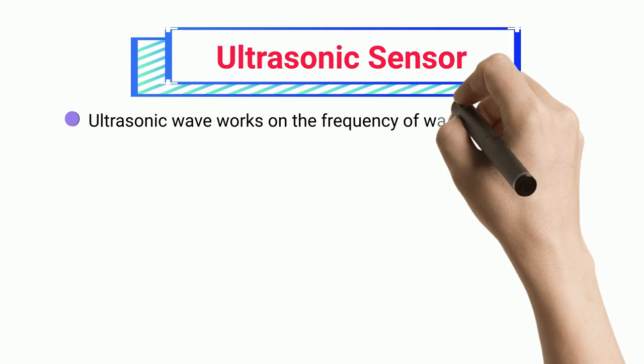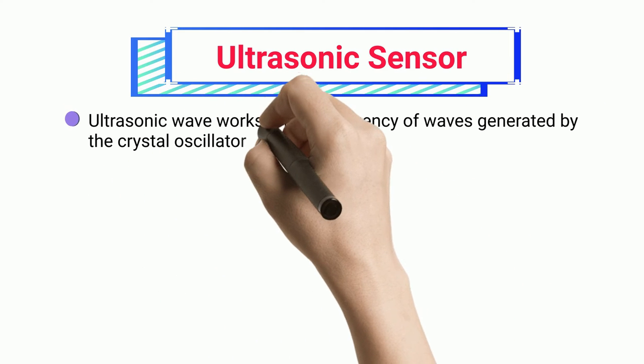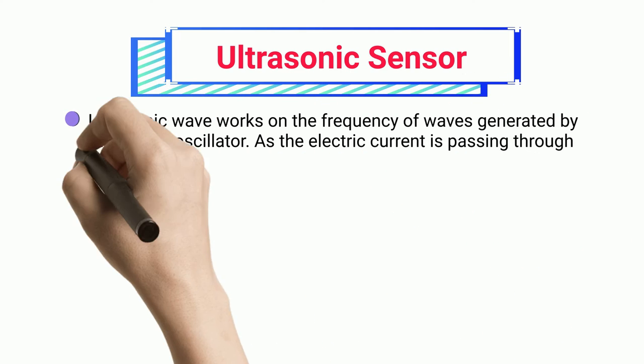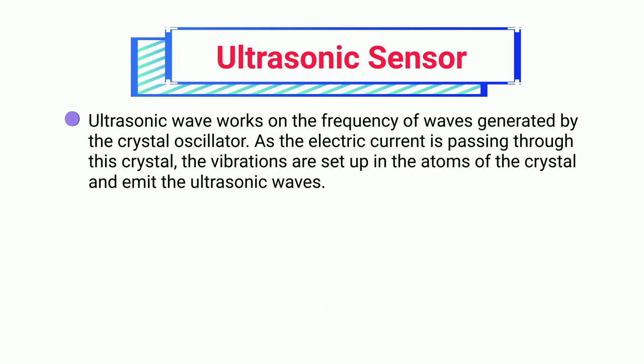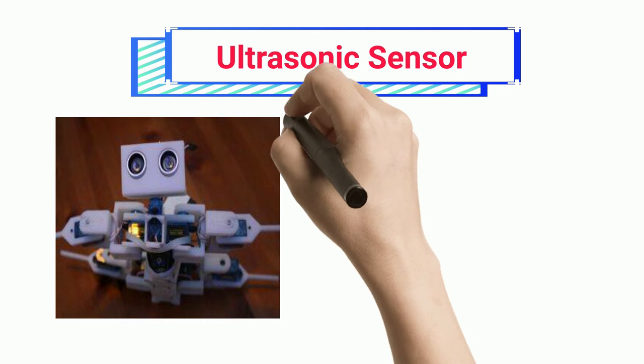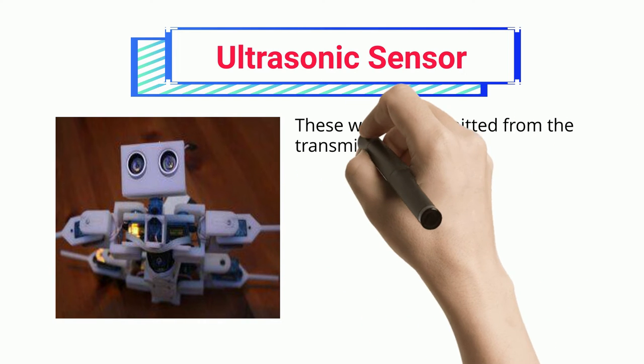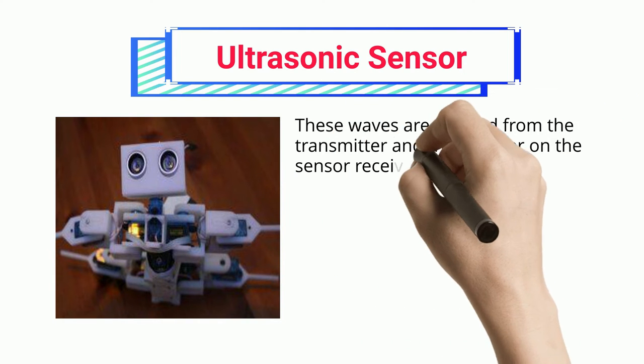Ultrasonic wave works on the frequency of waves generated by the crystal oscillator. As the electric current is passing through this crystal, the vibrations are set up in the atoms of the crystal and emit the ultrasonic waves.